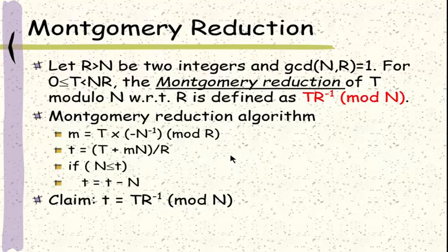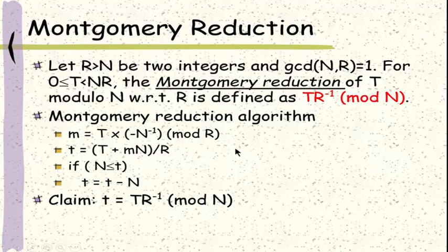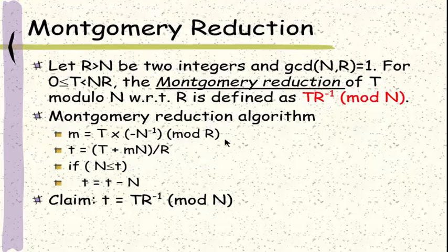Before we show this claim is true, let's see what is interesting in the Montgomery reduction algorithm. The goal of the algorithm is to compute the Montgomery reduction, which is the modular multiplication mod n. But in this algorithm, we don't see any modular multiplication mod n. What we do see is one modular multiplication mod r. This feature actually gives us a way to speed up the modular multiplication, which we'll show later on.